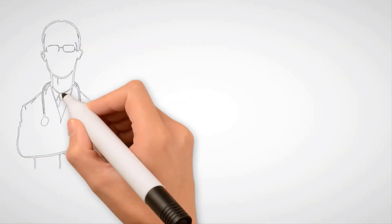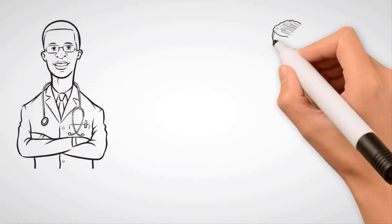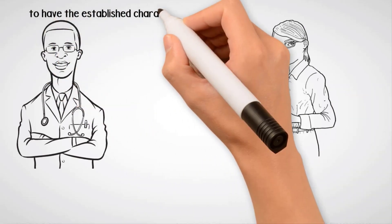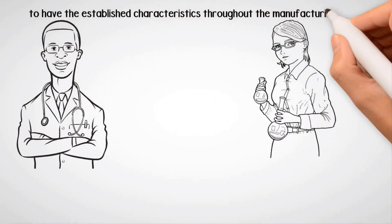Principle 5. Incoming, in-process, and finished product testing work together to ensure the product has the established characteristics throughout the manufacturing process.